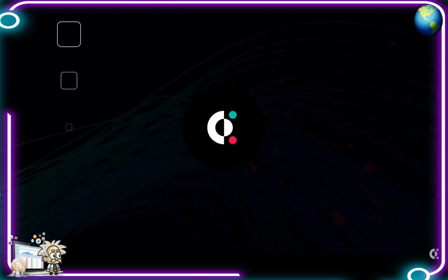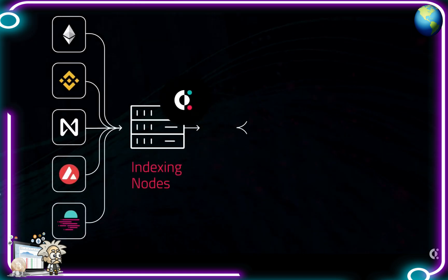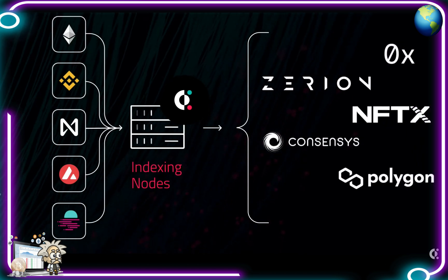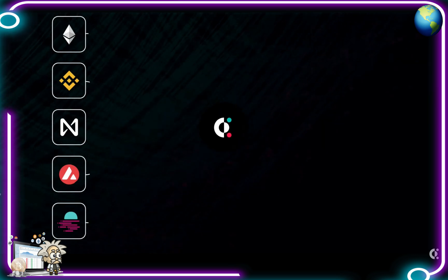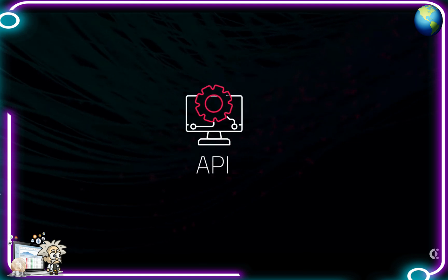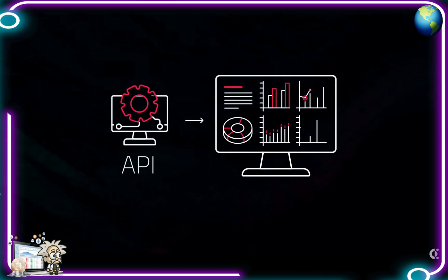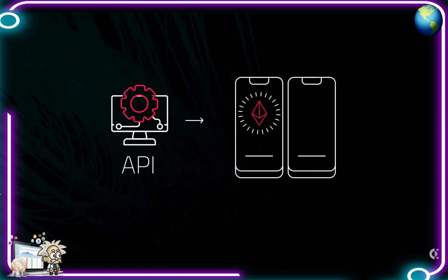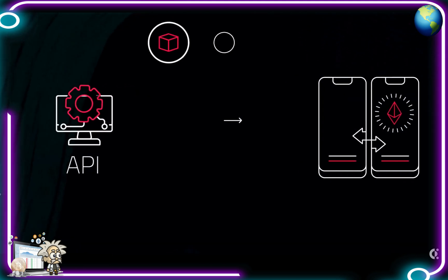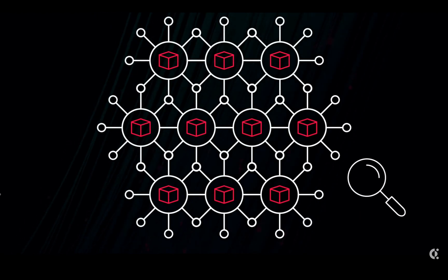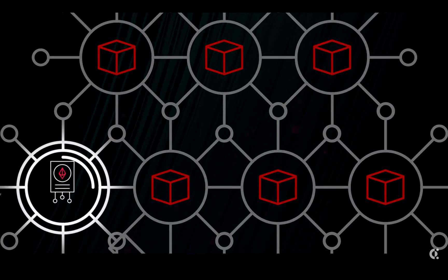Covalent is the only multi-chain API that provides easy access to deep, granular, and historical blockchain data. Covalent has indexed the entire blockchain so nothing is off the table, and all of this rich blockchain data can be consumed via their unified API with no extra code necessary. They are the behind-the-scenes data infrastructure of many of the top DeFi and NFT projects, currently providing rich granular data from the Ethereum blockchain.